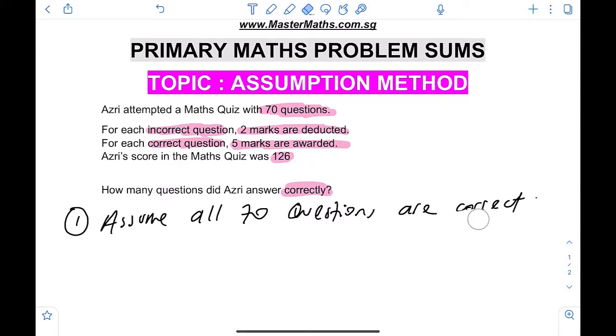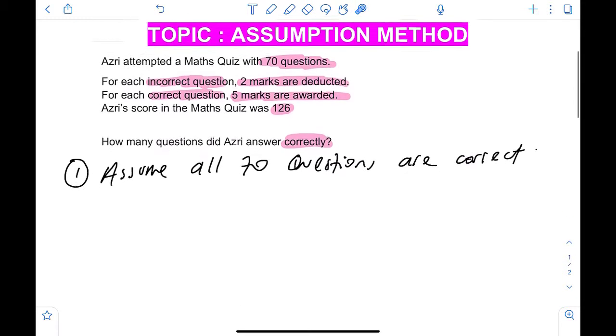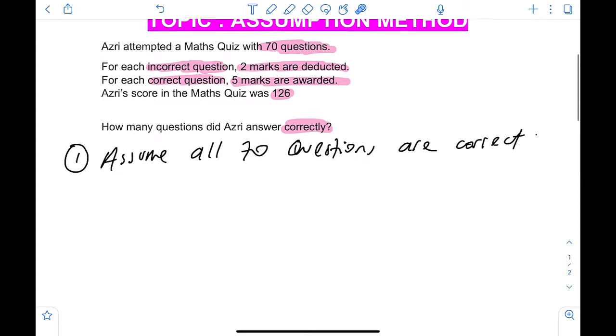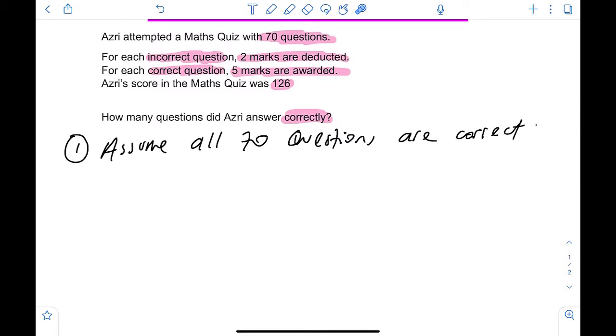So if you do this at the end, you will be able to achieve the number of incorrect questions. So we will achieve number of incorrect questions. Bear this in mind. At the end of the five steps, we will get number of incorrect questions. First step, assume all 70 questions are correct.